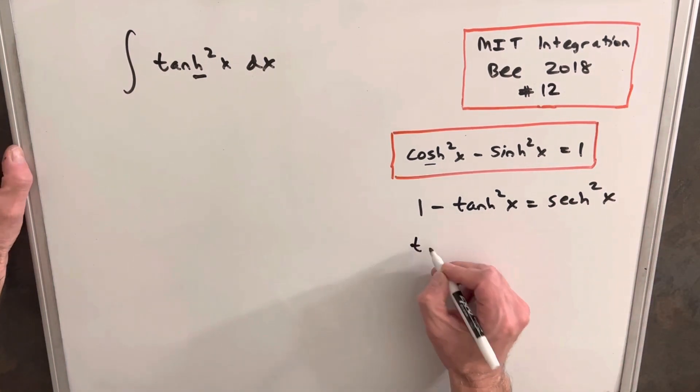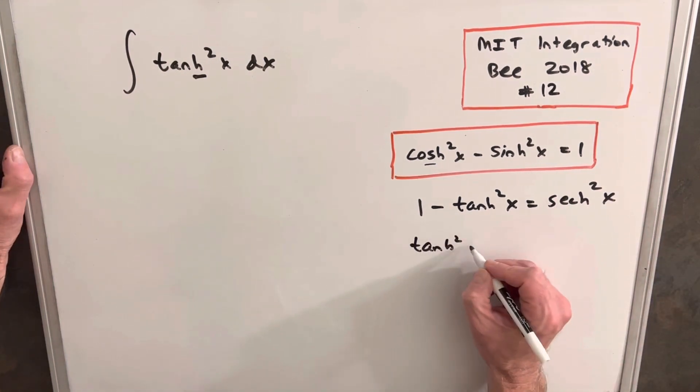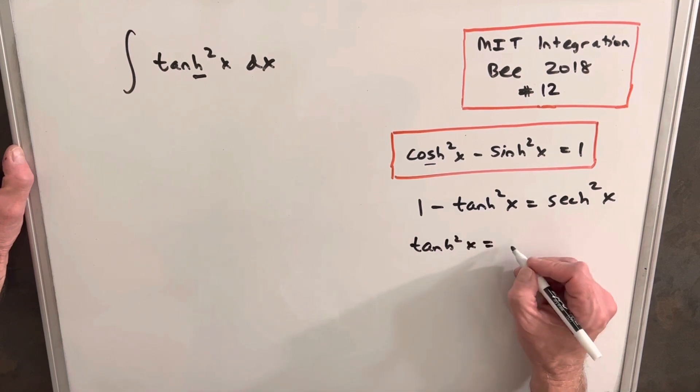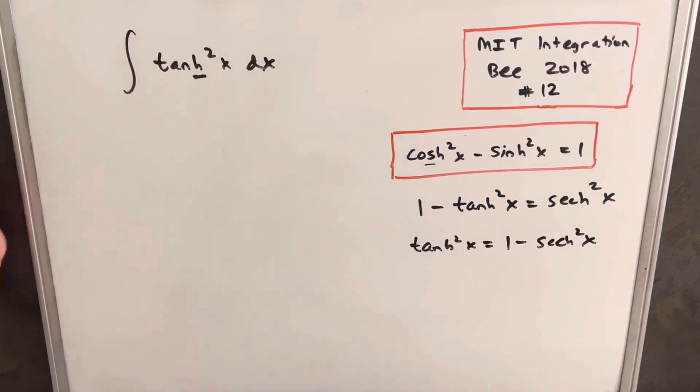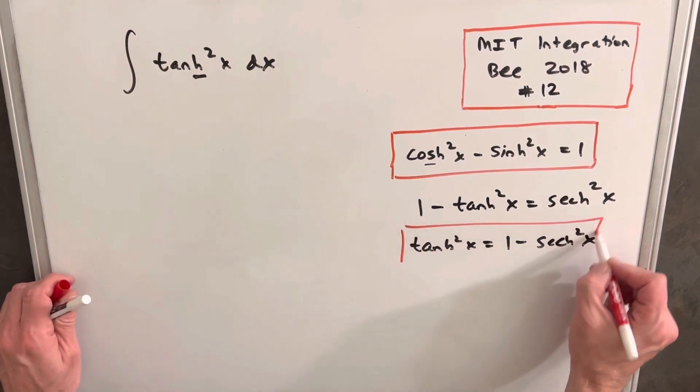And then with just a little rearranging, we have tanh squared equals 1 minus hyperbolic secant squared. Okay, and this is the one I want to use for our integral.